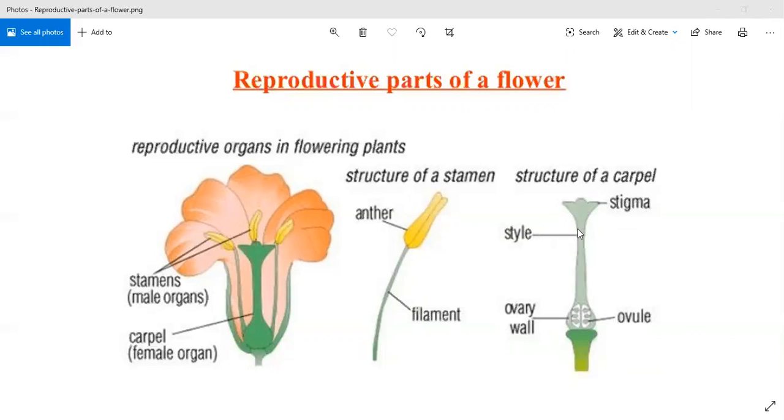Next is style. It is an elongated cylindrical part beneath the stigma that connects the stigma with the ovary.